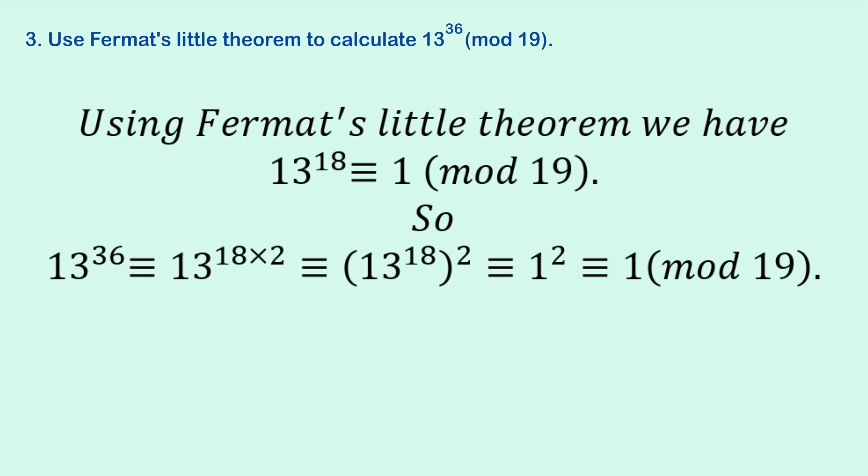So, we can do it this way. 13 to the 36 is congruent to 13. What's 36? It's 18 times 2. And now we can use the normal exponent rule. That's congruent to 13 to the 18, all squared. And we know that 13 to the 18 is 1 by Fermat's Little Theorem. So, we've got 1 squared, which is equivalent to 1.